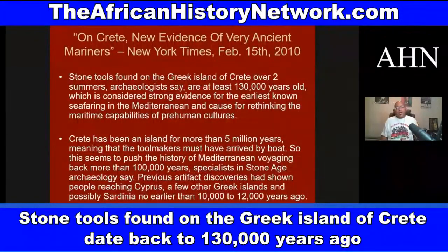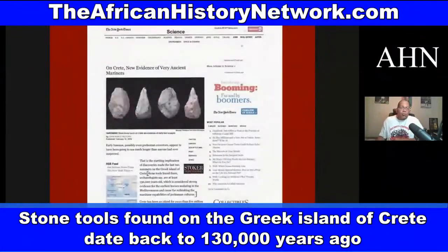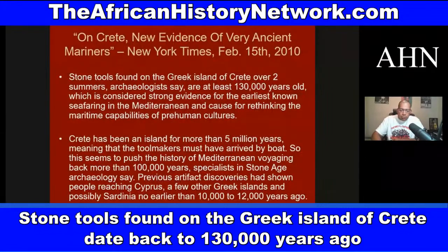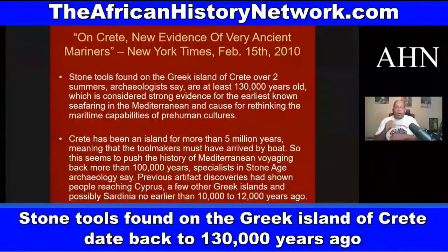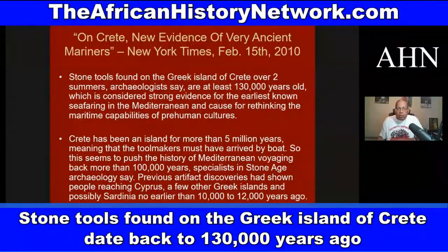This discovery from February 15th, 2010 — there's an article from the New York Times: 'On Crete, New Evidence of Very Ancient Mariners.' Stone tools found on the Greek island of Crete over the course of two summers of excavation are at least 130,000 years old, which is considered strong evidence for the earliest known seafaring in the Mediterranean and calls for rethinking the maritime capabilities of pre-human cultures.